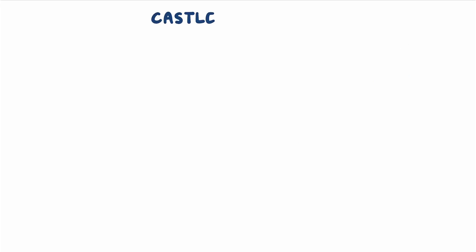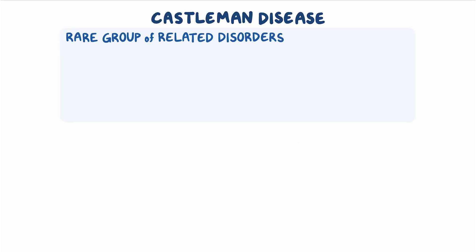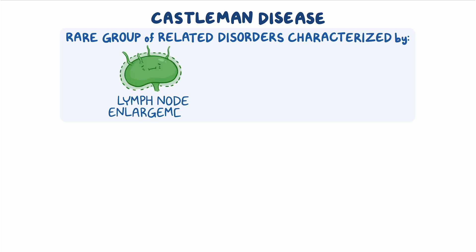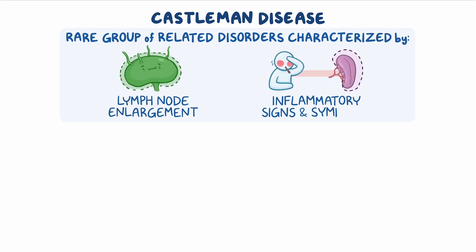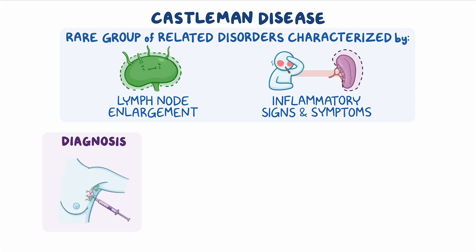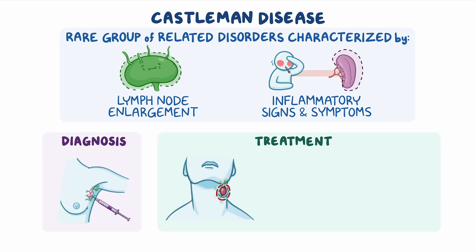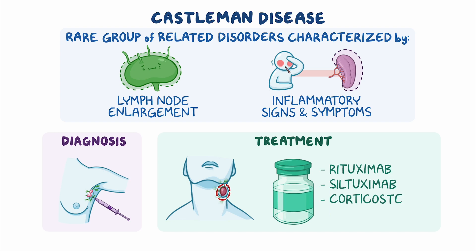As a quick recap, Castleman disease describes a rare group of related disorders characterized by lymph node enlargement and inflammatory signs and symptoms. Diagnosis is confirmed through lymph node biopsy. Treatments can include surgery, medications like rituximab, ciltuximab, and corticosteroids and chemotherapy.